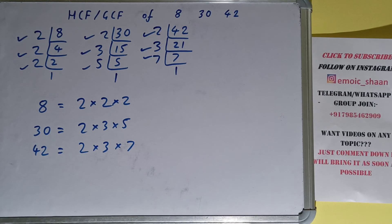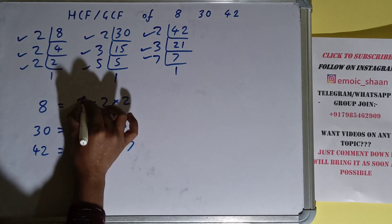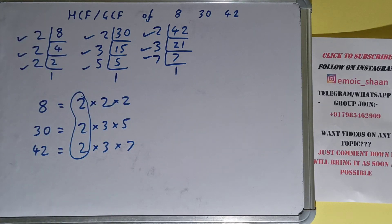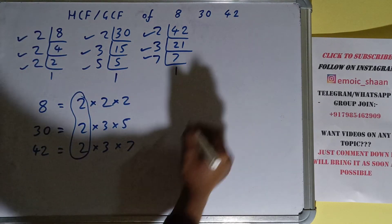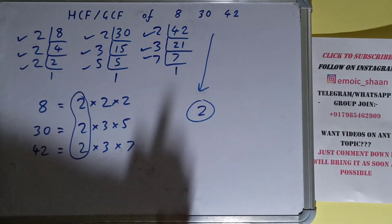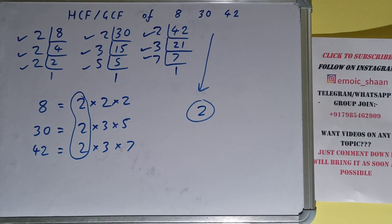The next thing you need to do is circle out the common factors among the three. We have only one common factor, that is 2, among the three. So our answer will be 2. The HCF or GCF of the numbers 8, 30, and 42 is 2. If you found the video helpful, please hit the like button, do consider subscribing, and thanks for watching.